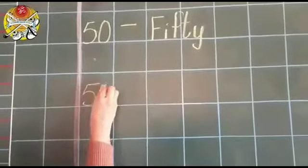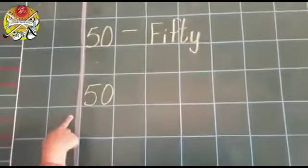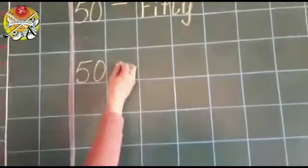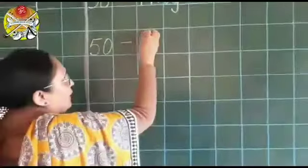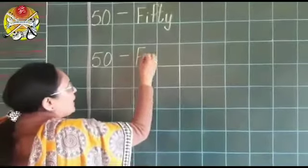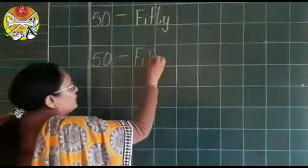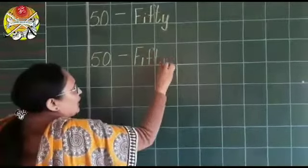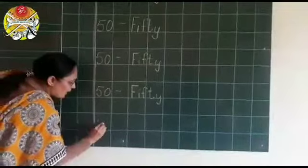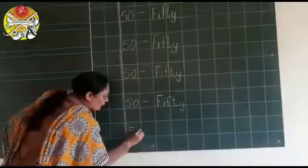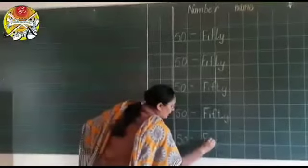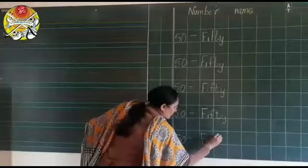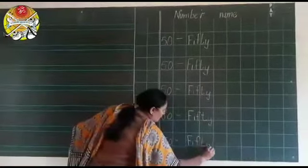41 - FORTY-ONE. We will leave 1 square and write again. 41 near the red line. Then next box dash. And then the spelling. Again, we will write 41 - FORTY-ONE.